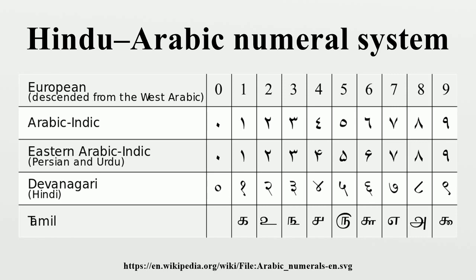The first dated and undisputed inscription showing the use of a symbol for zero appears on a stone inscription found at the Chaturbhuja Temple at Gwalior in India, dated 876. In 10th-century Islamic mathematics, the system was extended to include fractions, as recorded in a treatise by Syrian mathematician Abu'l-Hasan al-Uqlidisi in 952–953.